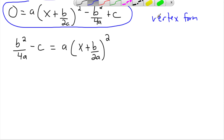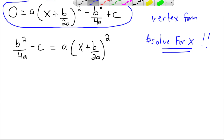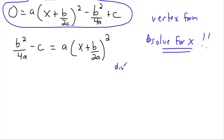Our goal is to solve for x. It's just ugly algebra, but away we go. We can divide both sides. Right now I want to get x on its own, so I've got to get rid of the a, get rid of the squared, and get rid of the b over 2a. So the first step is going to be to divide by a.